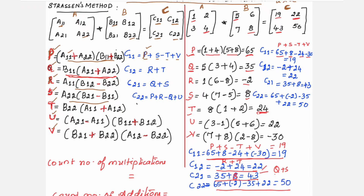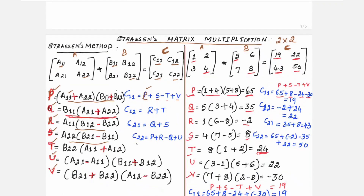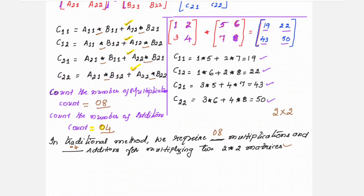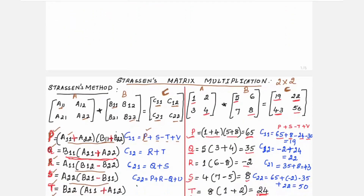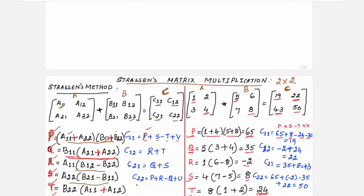C22 formula is P + R − Q + U. P = 65, R = −2, Q = 35, U = 22, so C22 = 50. Placing the results: 19, 43, 22, 50 — we can compare with the traditional method: 19, 22, 43, 50. Here also you got 19, 22, 43, 50.